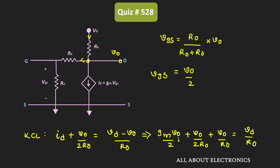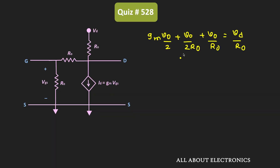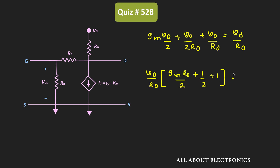Taking v0 outside on the left-hand side and simplifying, we can write: v0 divided by r0 times (gm·r0/2 plus 1/2 plus 1) equals vd divided by r0. The r0 terms cancel, giving: v0 times (gm·r0/2 plus 3/2) equals vd.